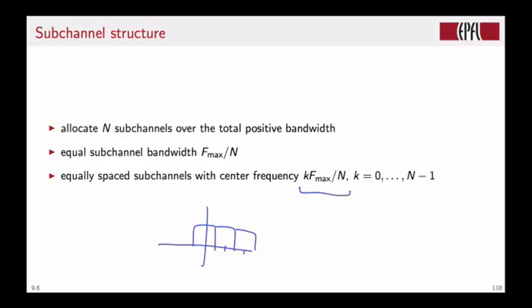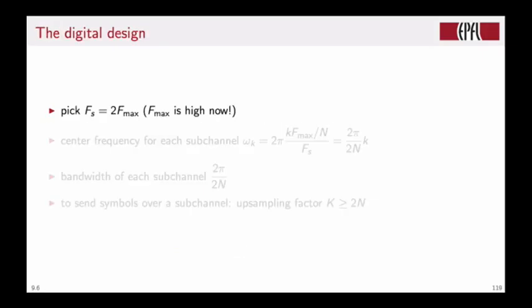Now we want to translate this design to the digital domain, so we pick a sampling frequency that is at least twice the maximum frequency in the channel. But careful now, because Fmax is quite high. The center frequency for each sub-channel will be omega K equal to 2 pi K Fmax over N divided by the sampling frequency. And if we sample at the Nyquist frequency, so Fs is equal to twice Fmax, then omega K becomes simply 2 pi over 2N times K. We will not simplify the 2's in the fraction because they will be useful later.